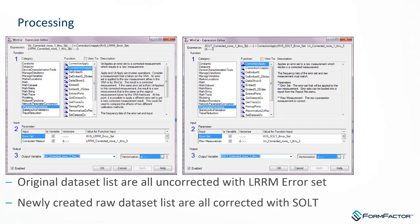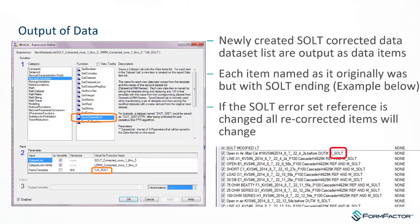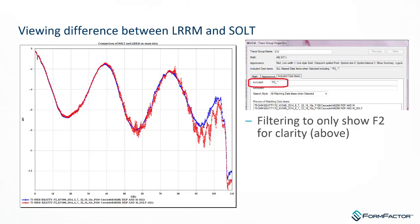Instead of remeasuring everything, we can simply take the existing results — we still have the error set — unapply the correction to get back to raw data, and then reapply a newly computed SOLT error set. With one measurement, you can conveniently look at a calibration comparison. In this example, we create a new data set and append the name 'SOLT.' The result shows before and after: blue is the LRRM measurement and red is the SOLT, so you can clearly see the calibration comparison.